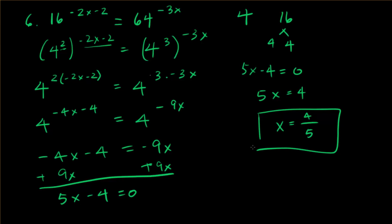I'm going to go ahead and check that in my calculator really quick. I'm going to do 4 fifths, store just that. 16 to the negative 2x minus 2, then 64 to the negative 3x. Yep, they equal each other, so that is the correct answer. Okay, good job.